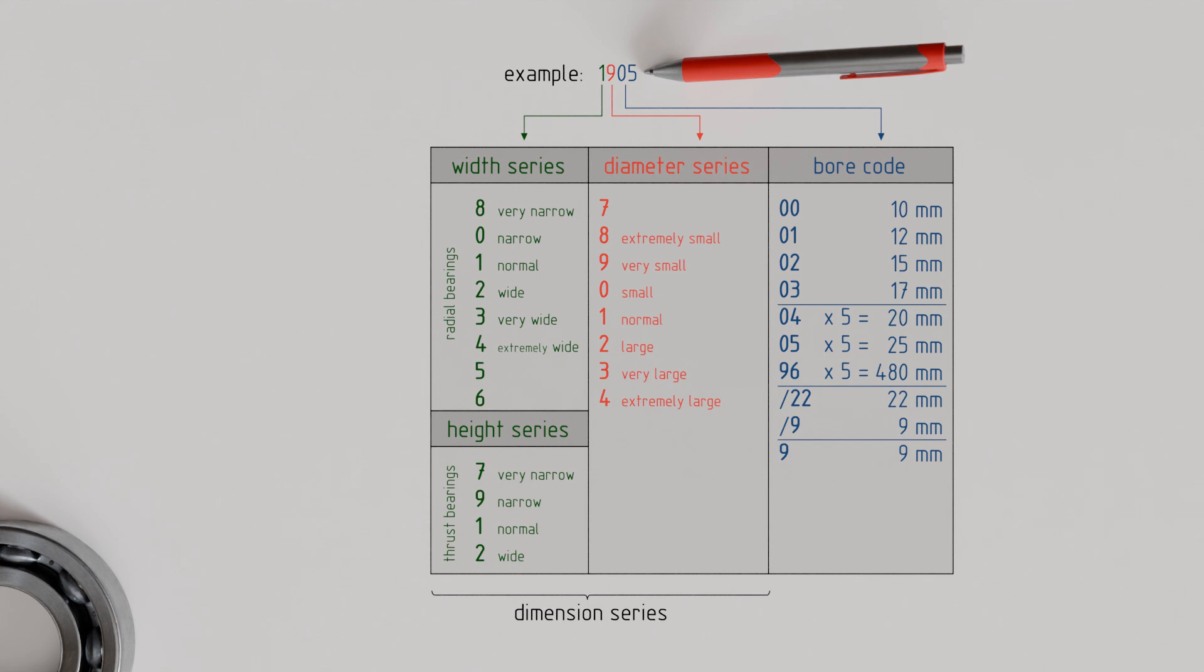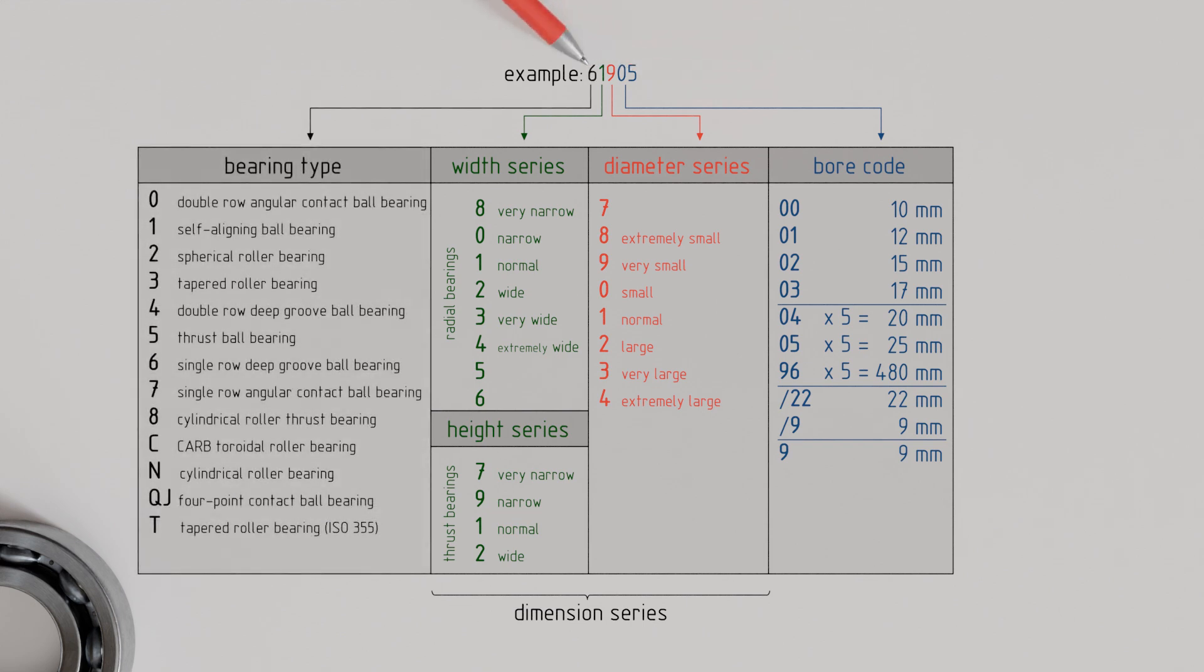namely the indication of the specific type of rolling bearing, for example whether it is a deep groove ball bearing, a tapered roller bearing, or a cylindrical roller bearing. The designation of the bearing type is placed immediately before the dimension series and is at the beginning of the bearing designation. The corresponding table lists the different bearing types and their respective codes, which can consist of single digits or single letters. In our case, the code 6 therefore indicates a single row deep groove ball bearing.